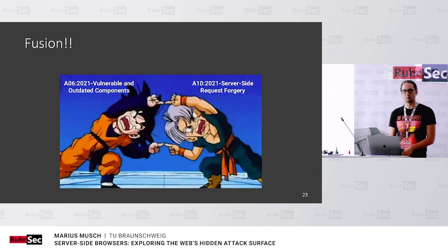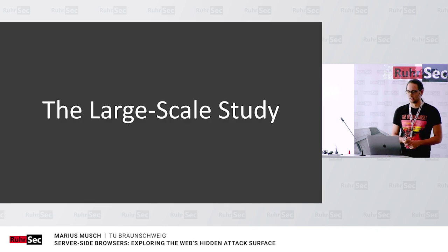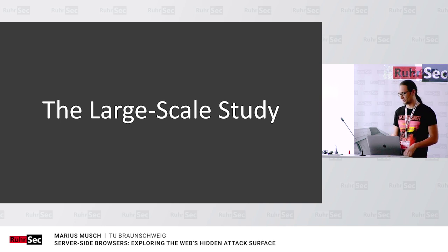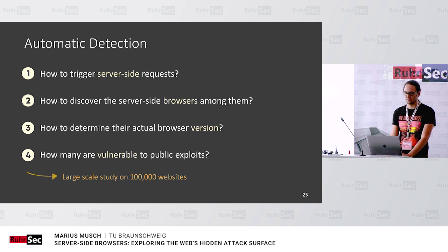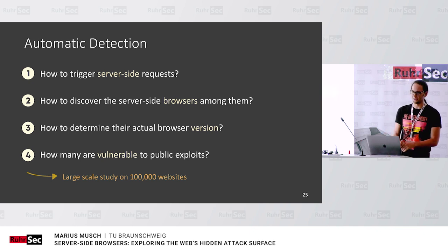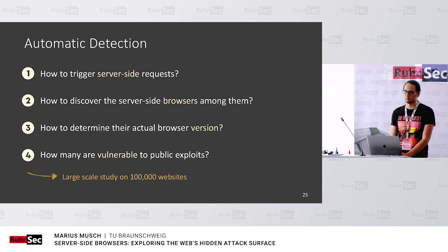I hoped to convince you this is a realistic scenario. We wanted to make sure — is this just something that works in theory, or are people actually vulnerable? We wanted to do a lab-scale study: find websites in the real world that use automated browsers that are outdated and visit user-controlled URLs. Open questions: how do we trigger these server-side requests? How many of those that visit our attacker-controlled server use a browser? And how do we determine which browser version they're using — are they up to date or running something old?